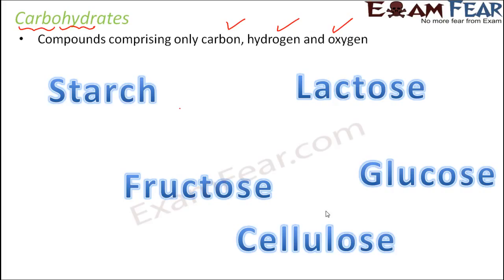Some examples of carbohydrates are starch, lactose, glucose, fructose, and cellulose. In your higher classes you will learn that some carbohydrates are simple carbohydrates with a very simple chemical structure, whereas some carbohydrates are complex — many small units of simple carbohydrates join together to form complex carbohydrates. You will learn about all those in higher classes, but here you can just look at these examples.